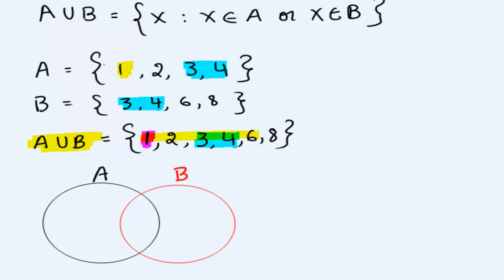In set A we have the elements 1, 2, 3, and 4. One goes here, two goes here. We notice that 3 and 4 appear in both sets A and B. So these go in the middle. And the elements that are only in set B are 6 and 8. So they go in this area.